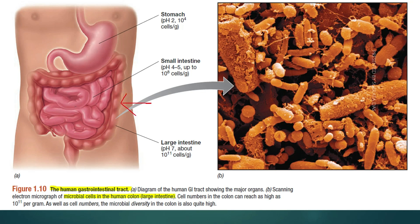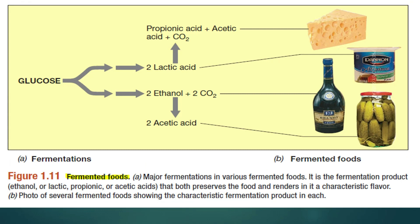In the human body, many types of microorganisms are present in the gastrointestinal tract for digestion. When we eat vegetables, the microorganisms degrade complex carbohydrates into simple carbohydrates, from which we absorb nutrition. In this way, microorganisms also help in the digestion of human food.